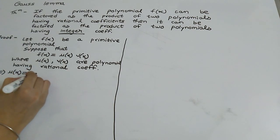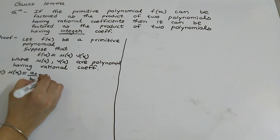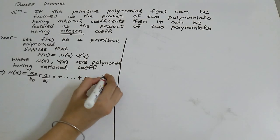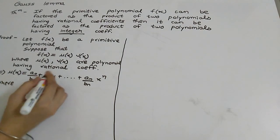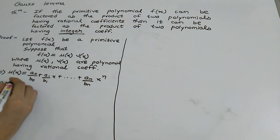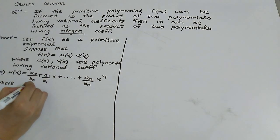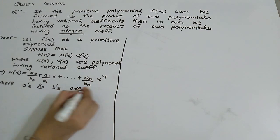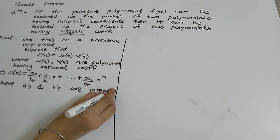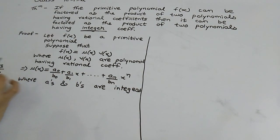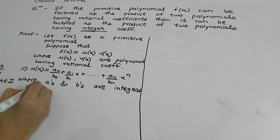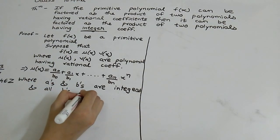So f(x) can be written as the product of two polynomials having rational coefficients. We write u(x) = a₀/b₀ + a₁/b₁·x + ... + aₙ/bₙ·xⁿ. Here the rational coefficients are present where a's and b's are all integers and all b's are non-zero.